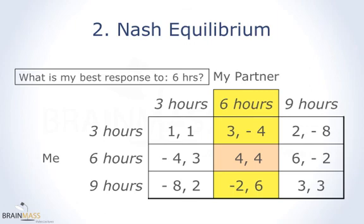Now we ask: if my opponent plays 6 hours, what is my best response? Going through every cell, the biggest number I can achieve is 4, and that happens when I play 6 hours. So if my opponent plays 6 hours, I should also play 6 hours. Finally, what is my best response to 9 hours? Going through the list again, my best return is 6, which corresponds to 6 hours of work. So if my opponent works for 9 hours, I should only work for 6 hours.